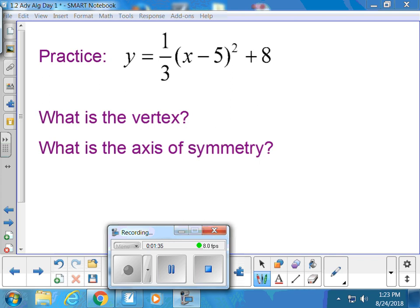Alrighty, go ahead and jot down this equation. Y equals one-third x minus five squared plus eight. When I look at it, I notice those parentheses, so I say, woo-hoo! We're in vertex form! Awesome! This will be good.